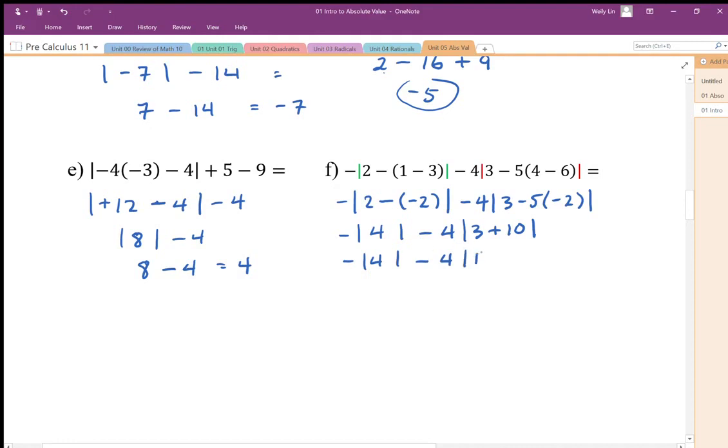At this point we've done all the work inside the absolute value, so we can convert the absolute value into positive. That's going to be positive four, but the negative outside makes it negative. This becomes thirteen, so we're going to do the multiplication first, four times thirteen. Then negative four minus fifty-two. Remember that you're getting more negative, so our final answer is negative fifty-six.